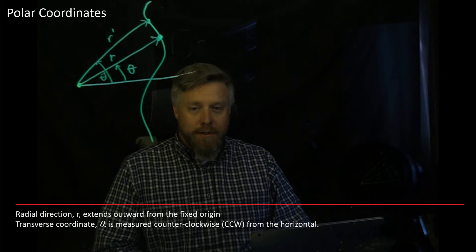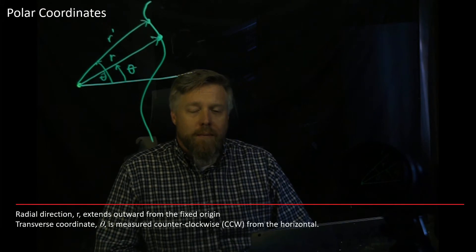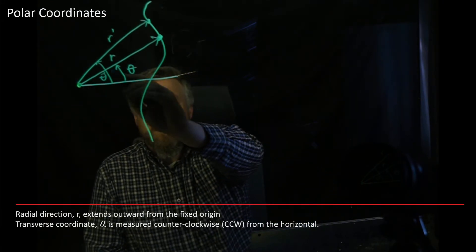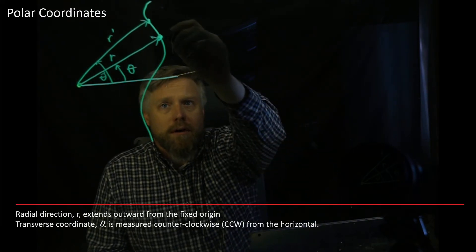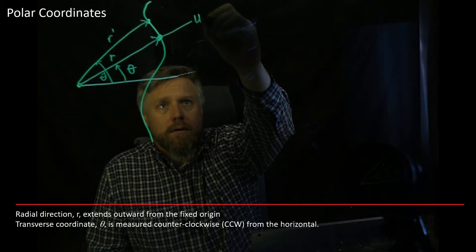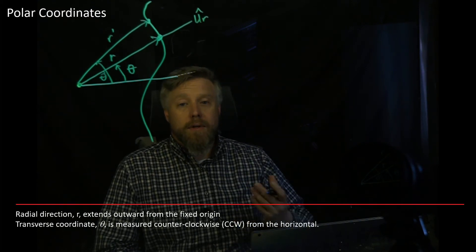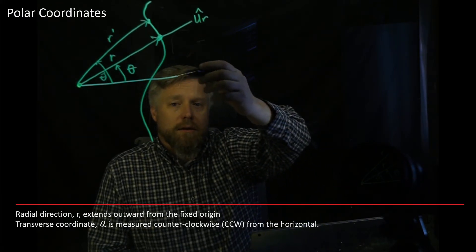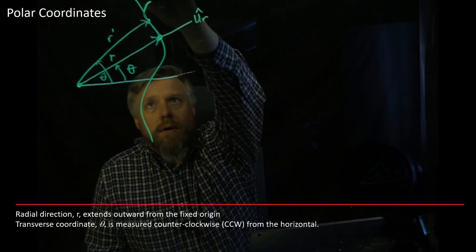So now if we think about our position vector, in rectangular coordinates we had two components — the x and the y. In polar coordinates, we'd only have one. We have the coordinate that tells us how long this radius is, and we're going to have a unit vector in that direction. We're going to call that ur, a unit vector in the radial direction. We're also going to have a perpendicular unit vector, and it's going to be in the direction of increasing theta. Theta increases counterclockwise, and that vector is going to be pointing perpendicular to ur, and we're going to call that u theta.